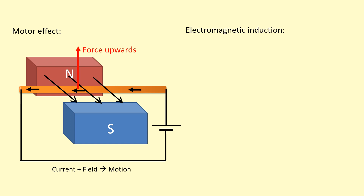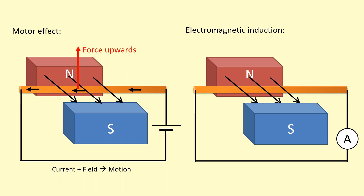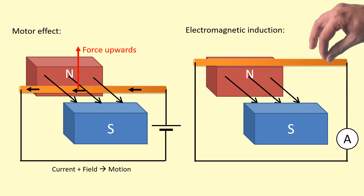In electromagnetic induction it's somewhat different. Here we have an ammeter instead — we don't have a power supply, we don't have something that's providing current. Instead, I'm going to actually move the wire myself, so I'm causing the motion, and this is going to induce a current in the wire. So in the case of electromagnetic induction, we have motion which we're applying, and there's a field already present — similar to the motor effect — and that's going to induce a current. The induced part is why it's called electromagnetic induction.